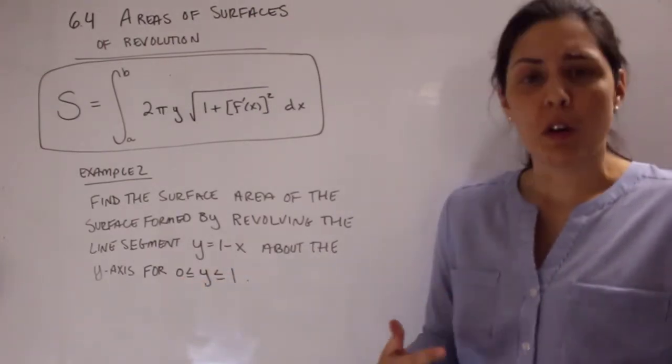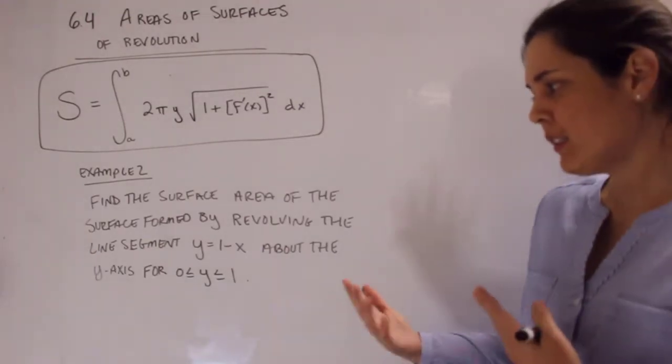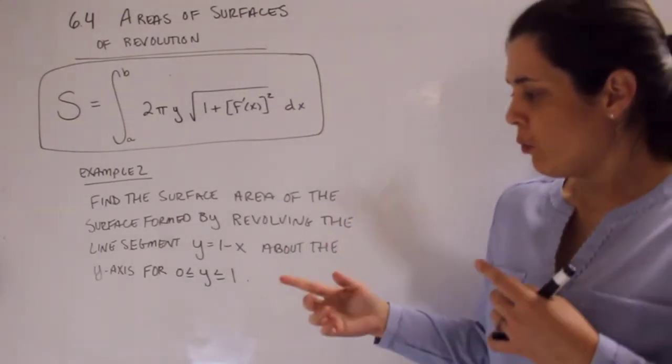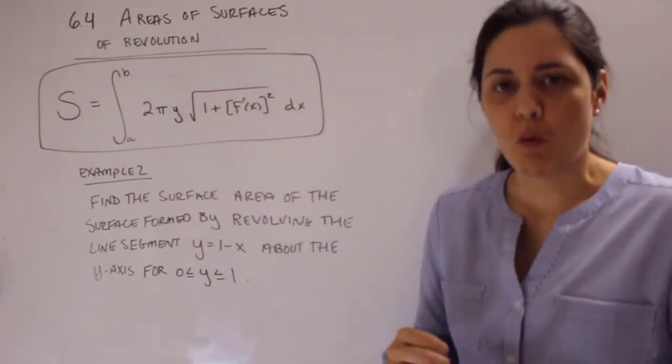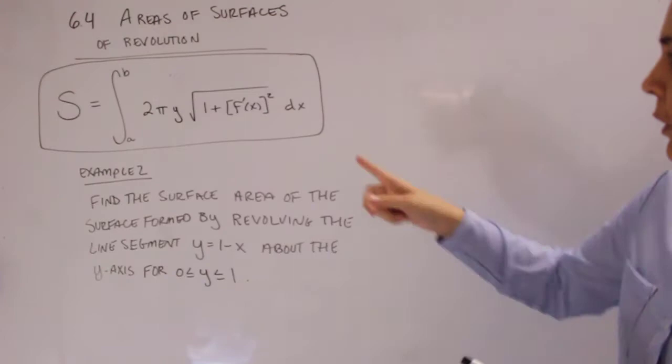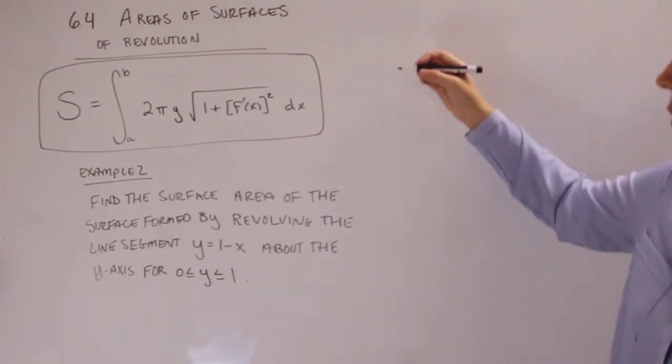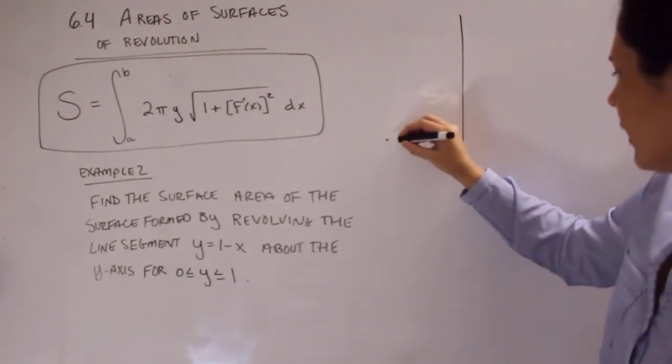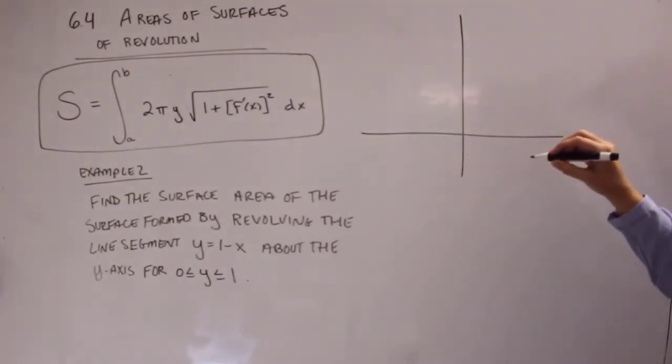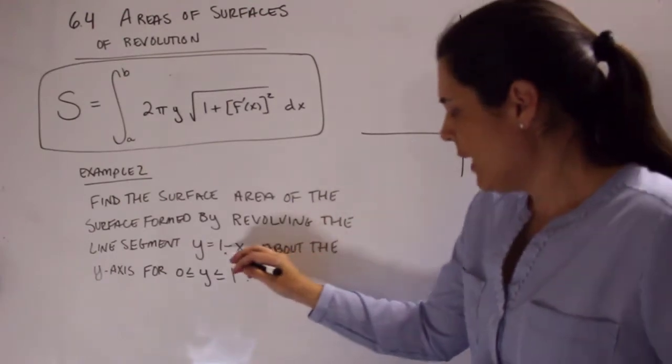Now let's draw this one because I want you to see what's happening here. And the reason why is we actually have to change this to be in terms of y this time around. So we're going to have a dy here in the back. So if I think about my line that I'm told that's going to get rotated or revolved,